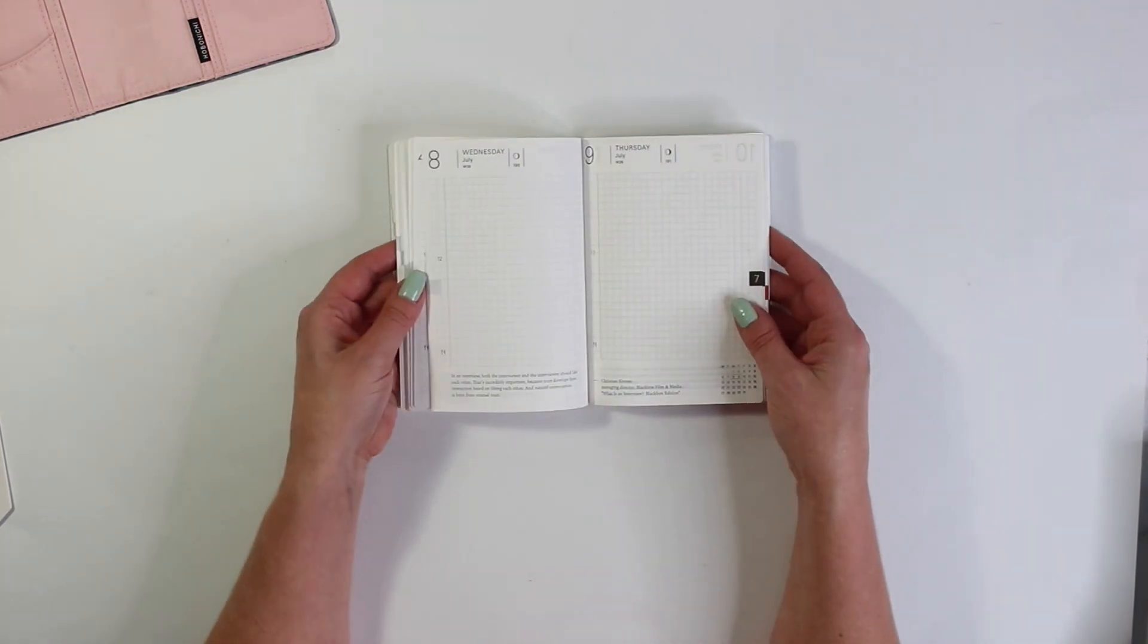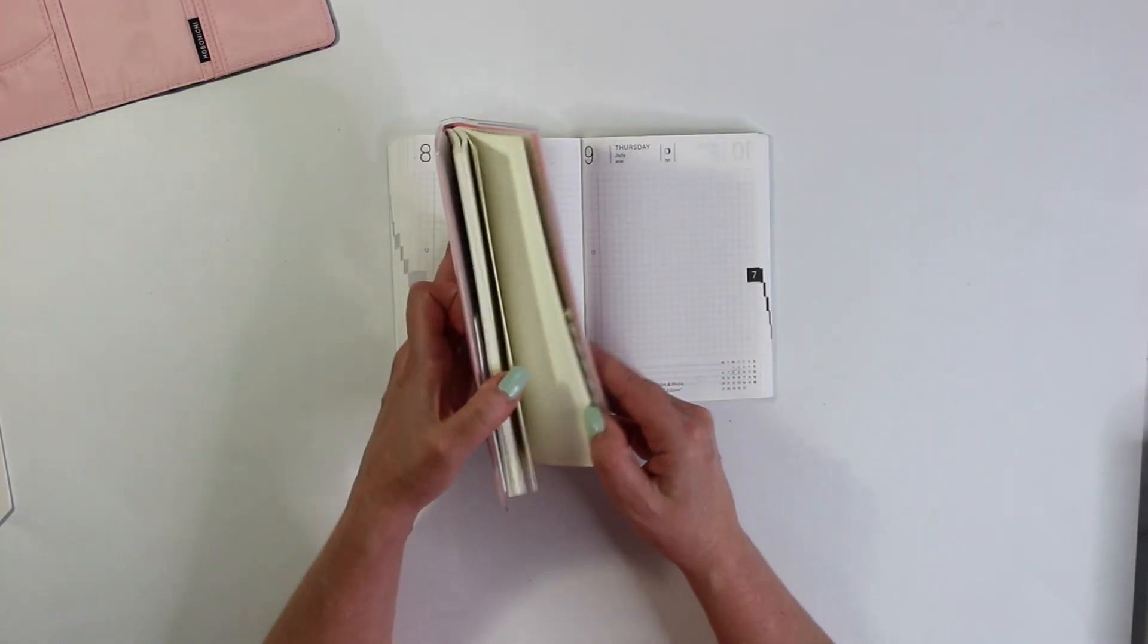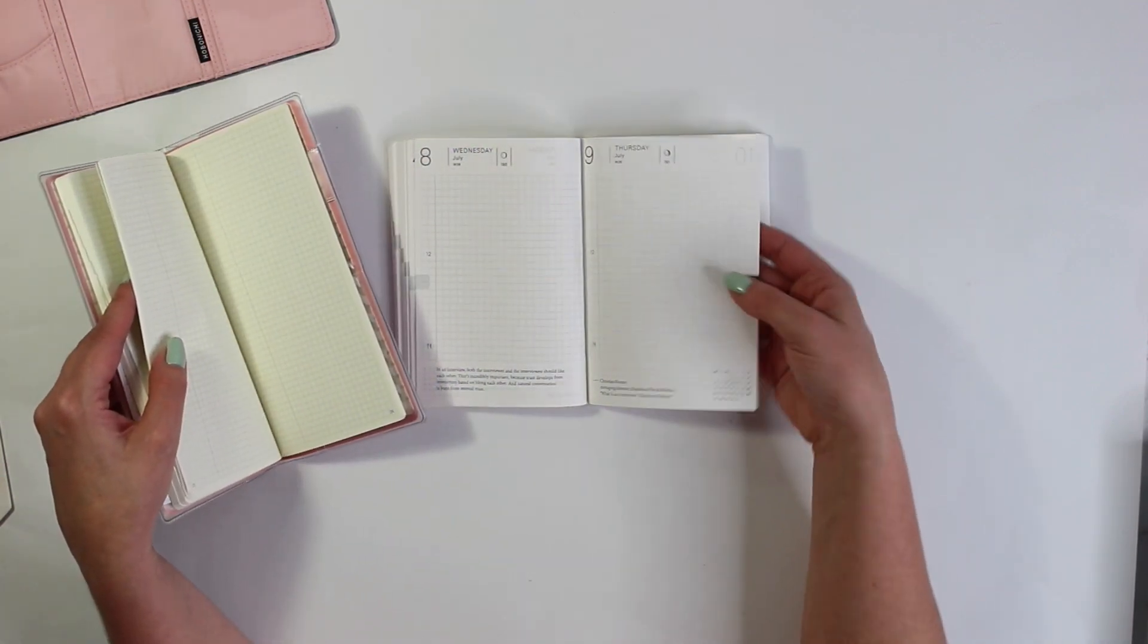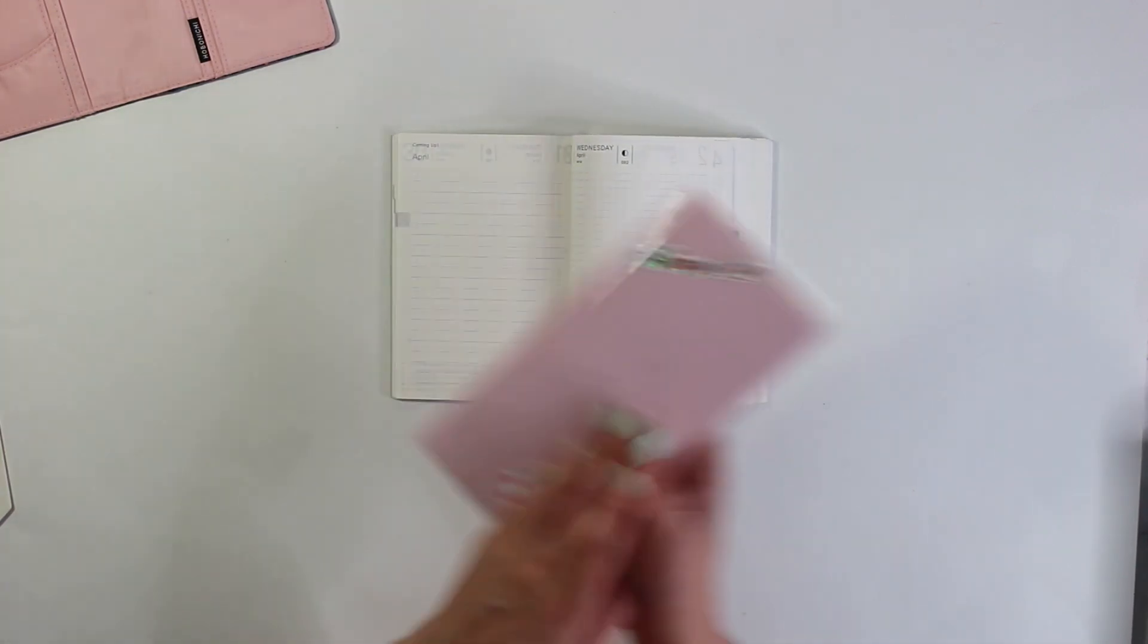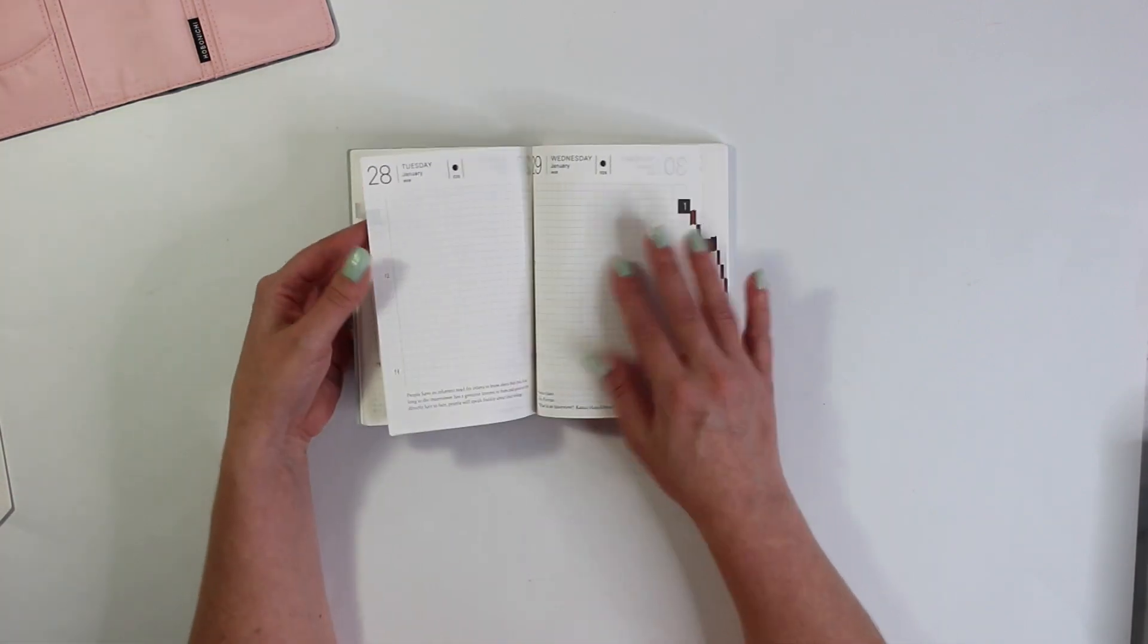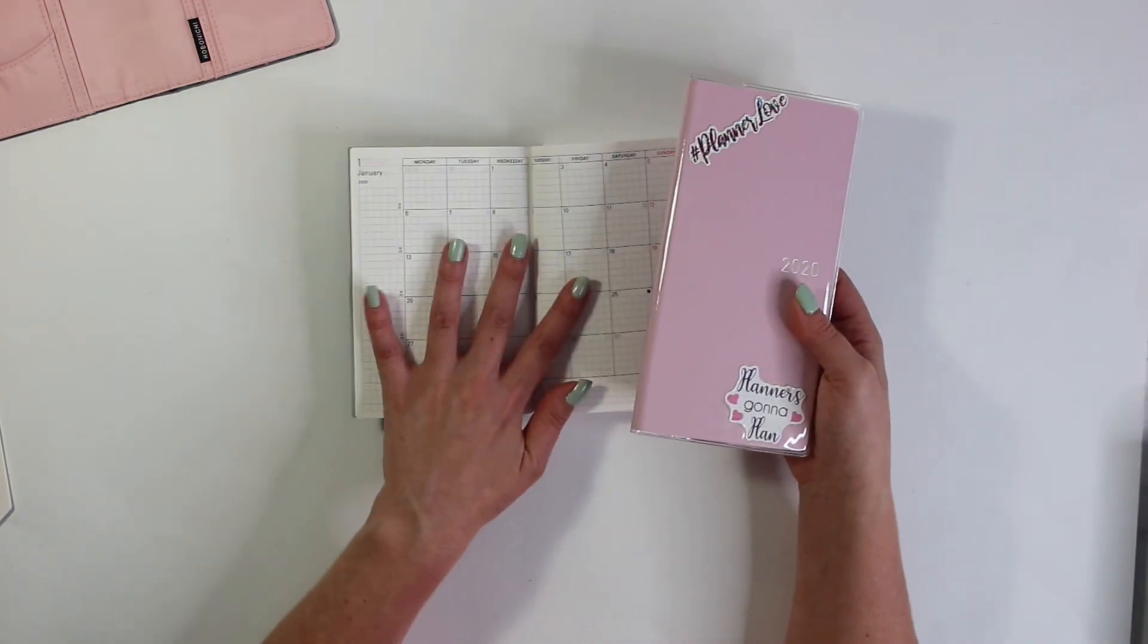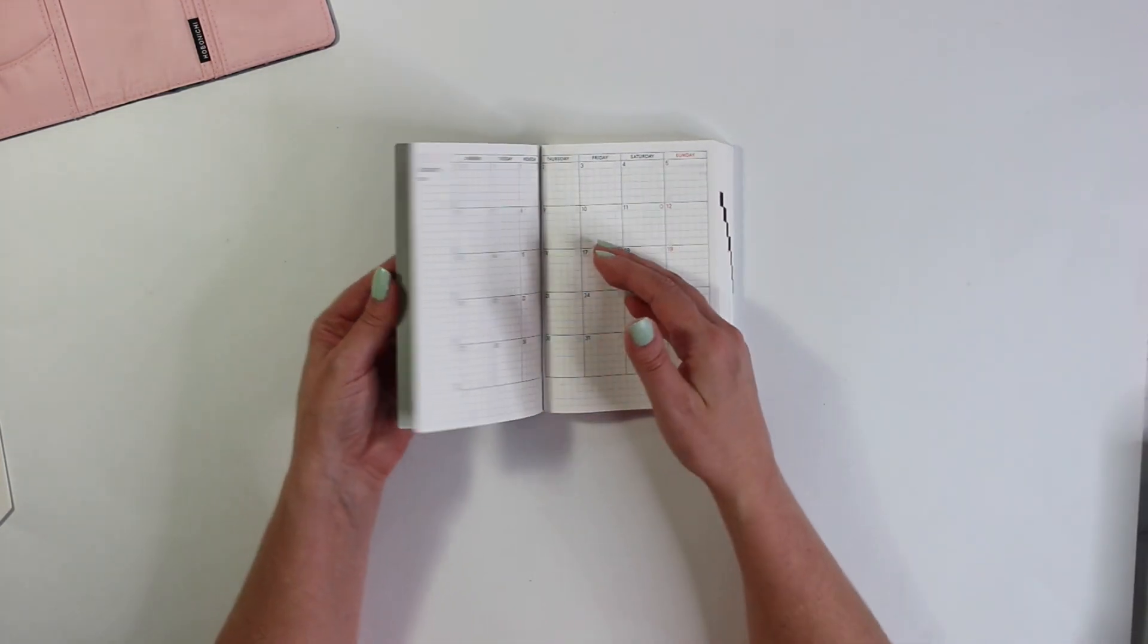Now the Hobonichi Techo have the Tamo River paper just like the Hobonichi Weeks except the Hobonichi Weeks is in a yellow paper where the Tamo River paper on here is white. Even better. It's just getting better and better. Now this may become my main planner because it is a daily planner which I love. And then I have the weeks here. So I can do the daily planning in the A6 and then my weekly planning in the Hobonichi Weeks.